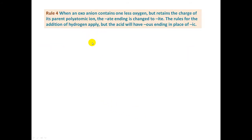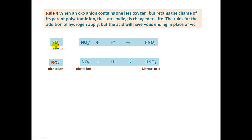Rule number four: when an oxoanion contains one less oxygen but retains the charge of its parent polyatomic ion, the -ate ending is changed to -ite. The rules for the addition of hydrogen still apply, but the acid will have an -ous ending in place of the -ic ending. For example, the nitrate ion — when a hydrogen is added, we end up with nitric acid. The nitrite ion has the same charge as the nitrate ion but one less oxygen, so -ate becomes -ite. When a hydrogen is added to the nitrite ion, the charge is reduced by one, giving us nitrous acid. The difference between nitric acid and nitrous acid is just one oxygen.